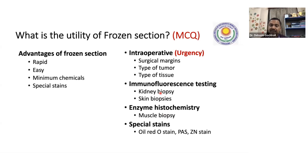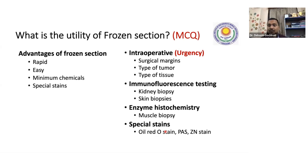That is why for immunofluorescence as well as enzyme histochemistry, we need fresh frozen tissue. Muscle is needed for enzyme histochemistry; skin and kidney biopsies are used for immunofluorescence. You can also do special stains on frozen sections — for example, oil red O is done for lipids. If you do this stain in routine processing, the alcohol used will wash off all the fat and you will not be able to demonstrate lipid. That is why for fat demonstration, we need a frozen section.